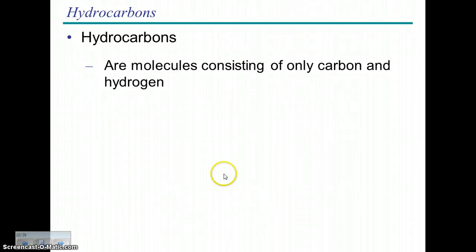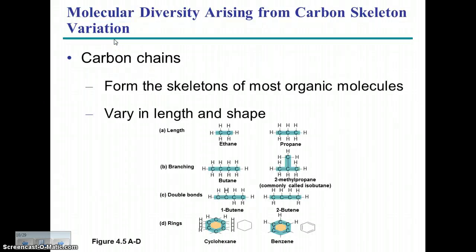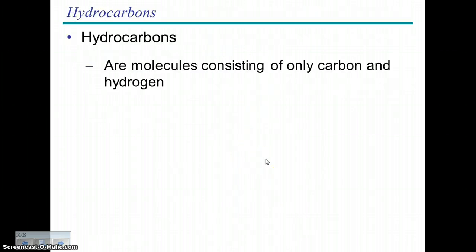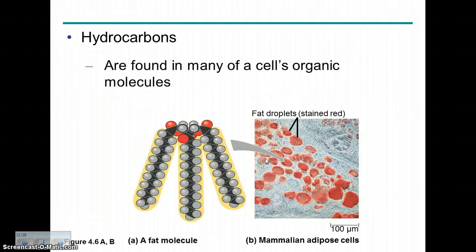Hydrocarbons. Name's pretty self-explanatory. So these are molecules that consist just of carbon and hydrogen, like these guys here. But there are many molecules in us that have particular combinations or stretches of carbon and hydrogens. For example, these fat molecules here have these long carbon-hydrogen chains.